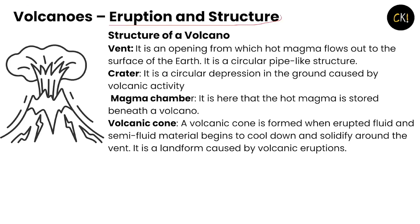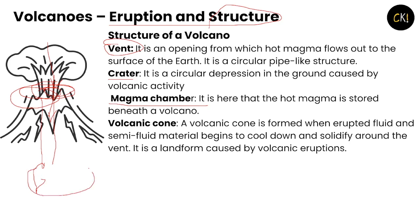Now let's look at the structure of a volcano. The vent is the opening from which hot magma flows out to the surface of the earth — a circular pipe-like structure. The crater is the circular depression in the ground caused by volcanic activity. The magma chamber is where hot magma is stored beneath the volcano. The volcanic cone is formed when erupted fluid and semi-fluid materials cool down and solidify around the vent.